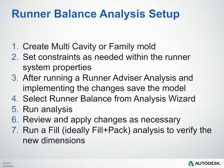The steps to setting up a runner balance analysis are as follows: create your multi-cavity or family tool, then set any constraints as needed within the runner system properties. After running a runner advisor analysis and implementing the changes, save the model. Select the runner balance from the analysis wizard. Run the analysis. Review and apply any changes as necessary. Then, of course, run a fill analysis to verify that the new dimensions make sense and that we have a good balance between parts. It's always good to have a quick sanity check.